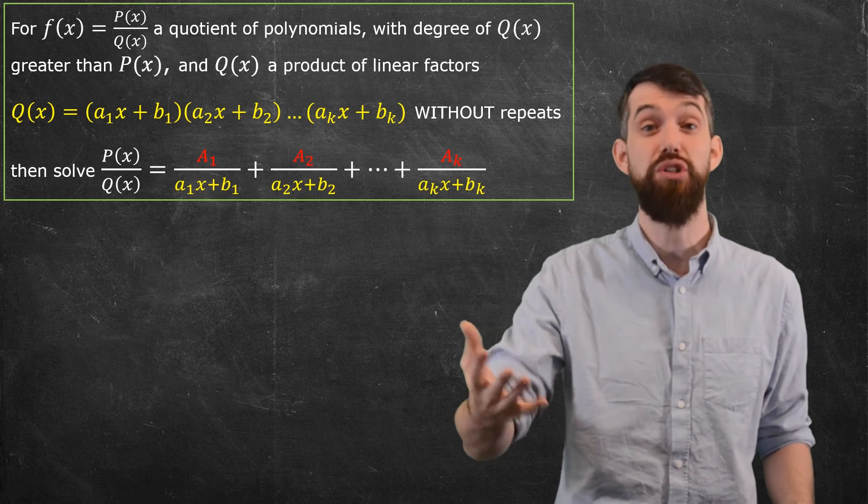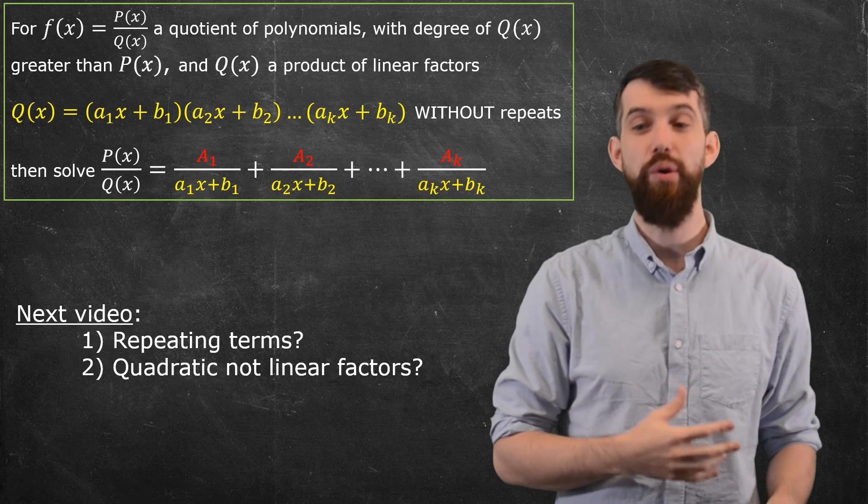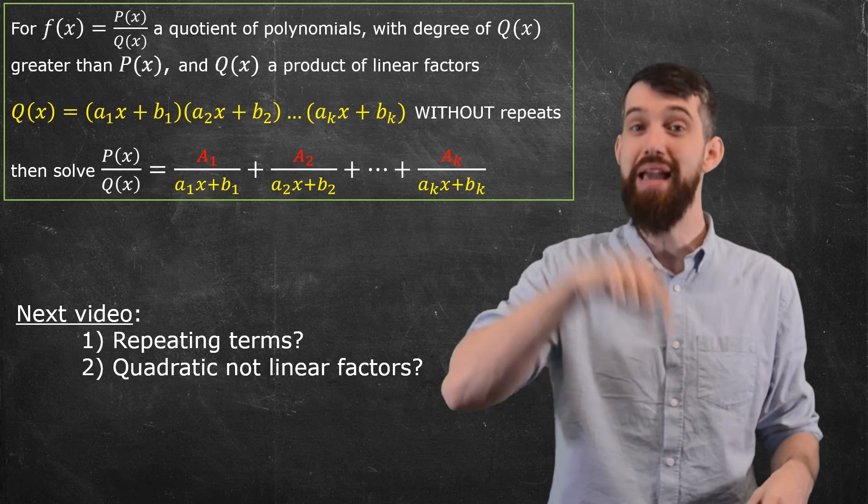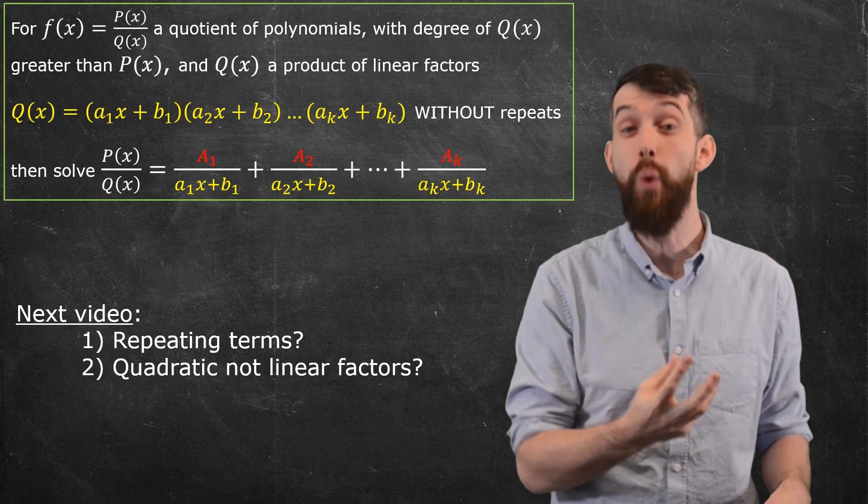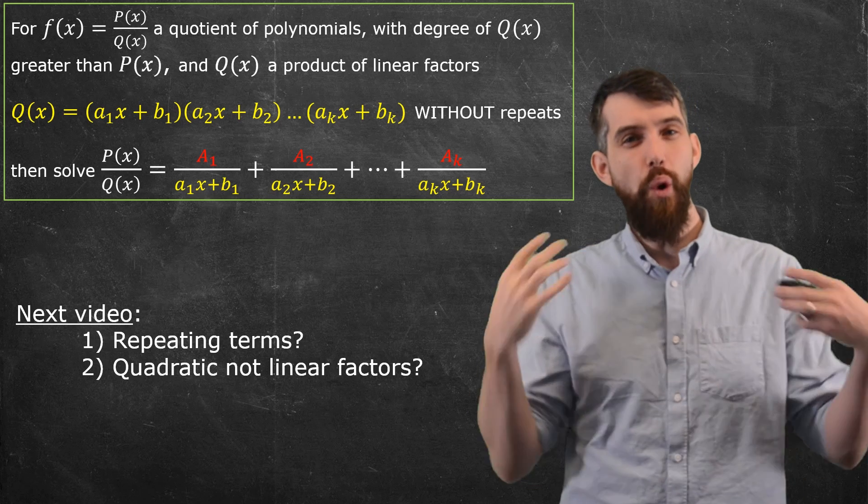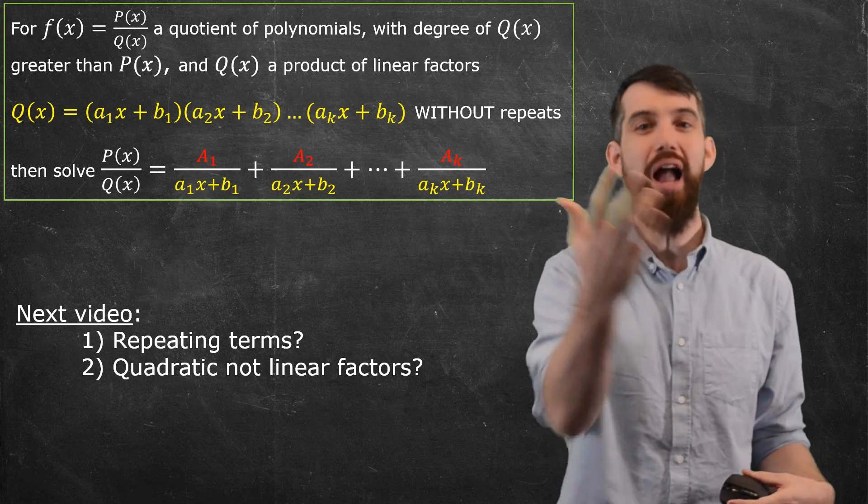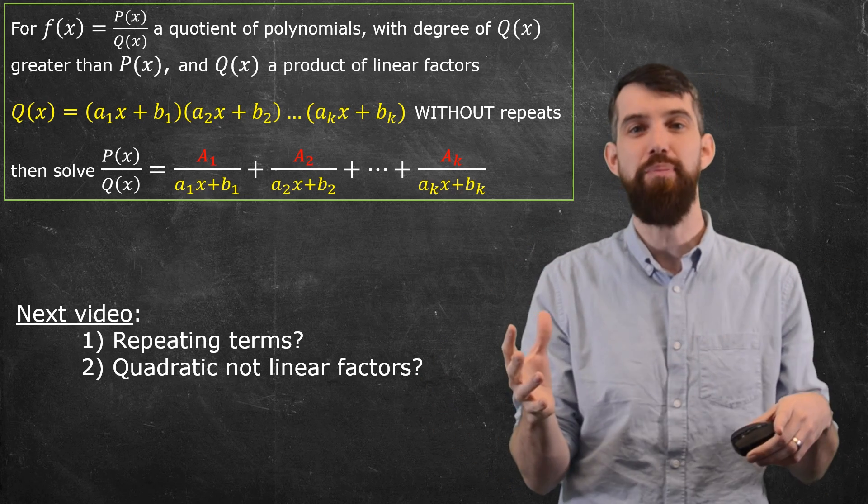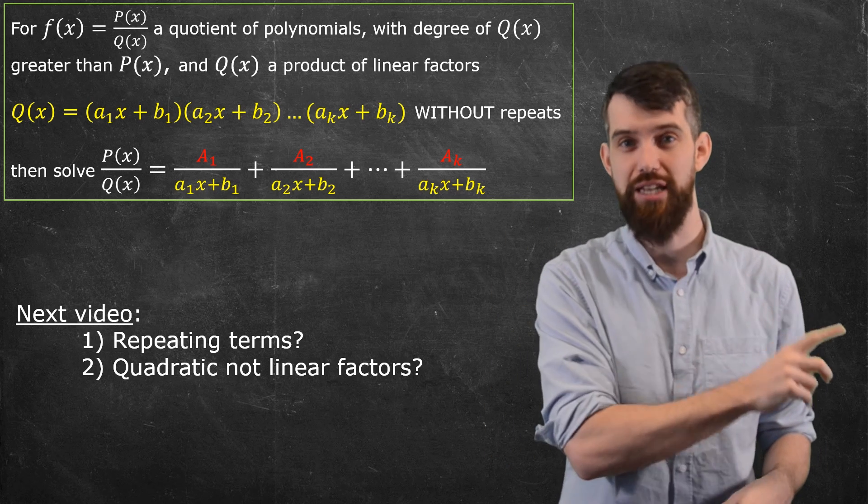However, we're not done yet, because we haven't exhausted all of the cases. So in the next video, what are we going to talk about? We're going to talk about, well, what if some of those linear terms were repeated? Like, instead of a division by x, it was a division by x squared, which is like a linear term twice. Or what if there was a quadratic term, a term like x squared plus 1, one where if you tried to do the quadratic formula, you get imaginary numbers. You couldn't split it up into linear factors very easily. That will be the subject of the next video.